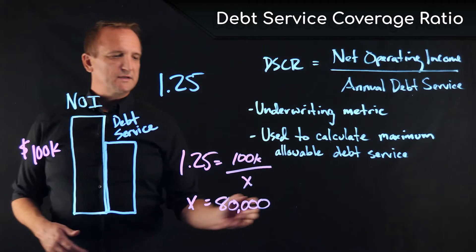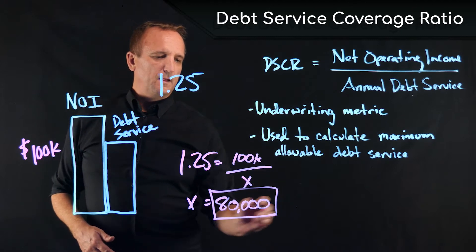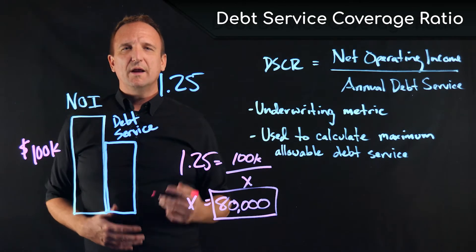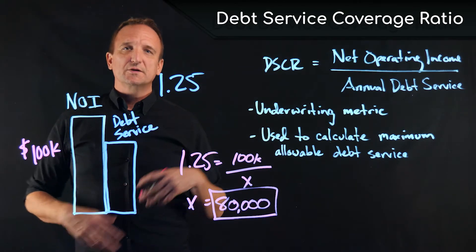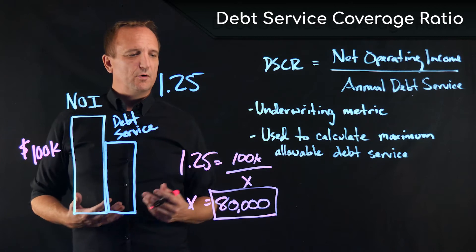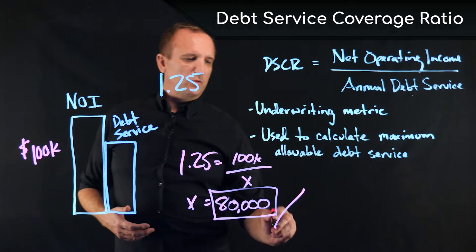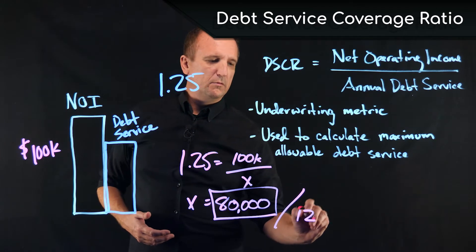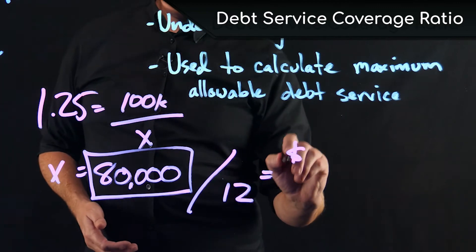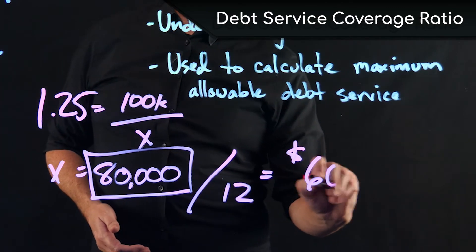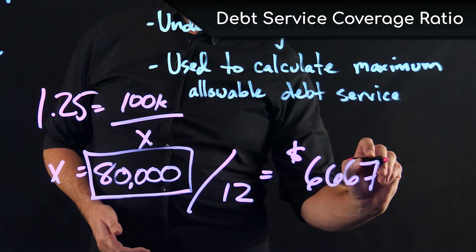So $80,000 becomes our maximum annual debt service. We take that number, divide it by 12, and we know that our maximum monthly loan payment is going to be $6,667.